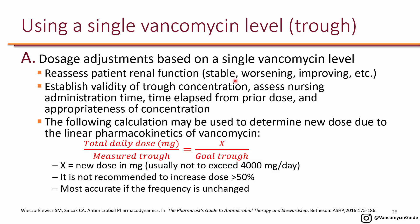Once you establish that the level was actually a trough, you can use a simple proportion to estimate how to adjust the dose. This equation of proportions only works with total daily dose. For example, if somebody was receiving 1g Q8h, then the total daily dose would be 3g, so you would put 3000mg here, and then put the actual measured trough level here.